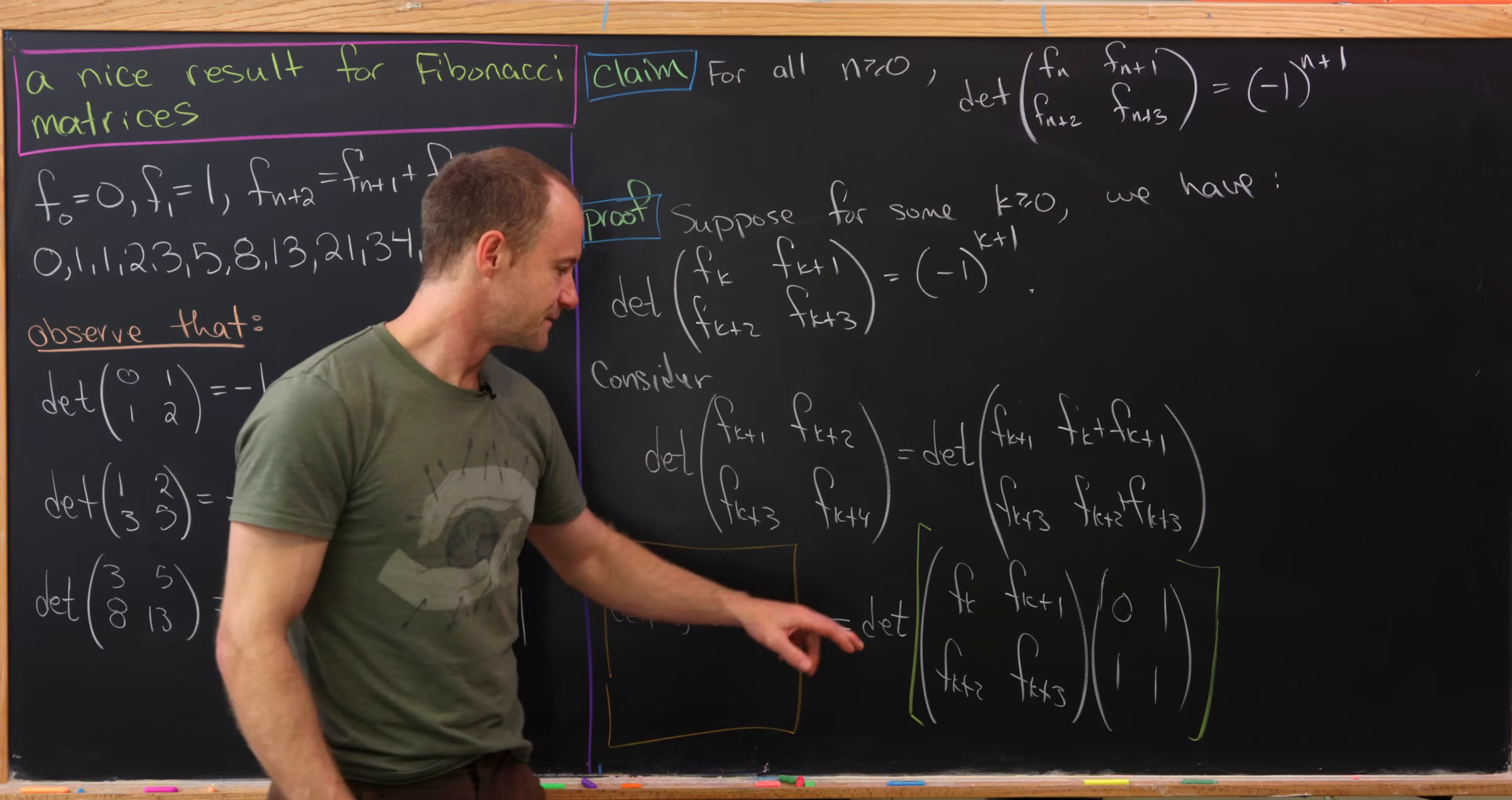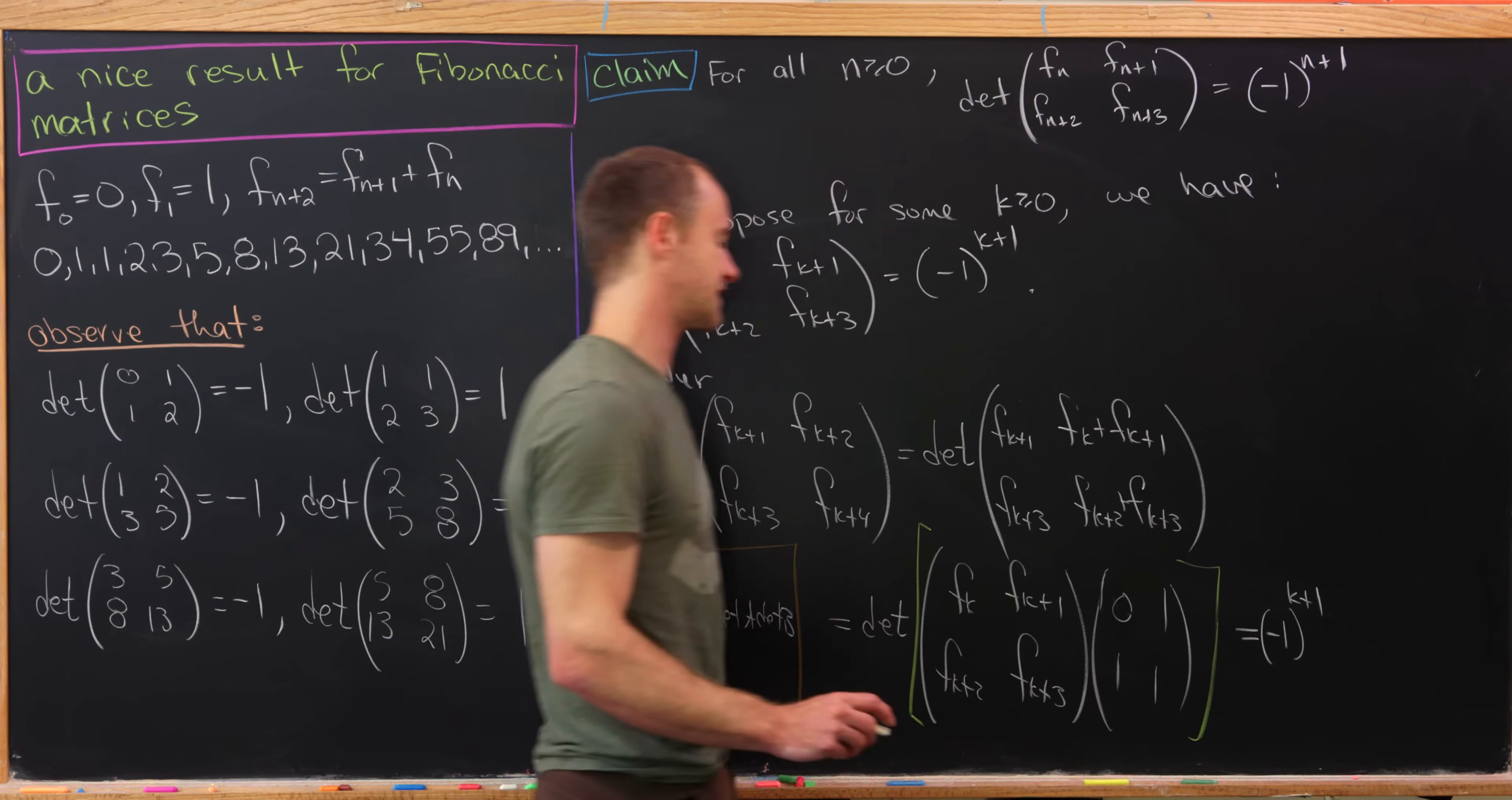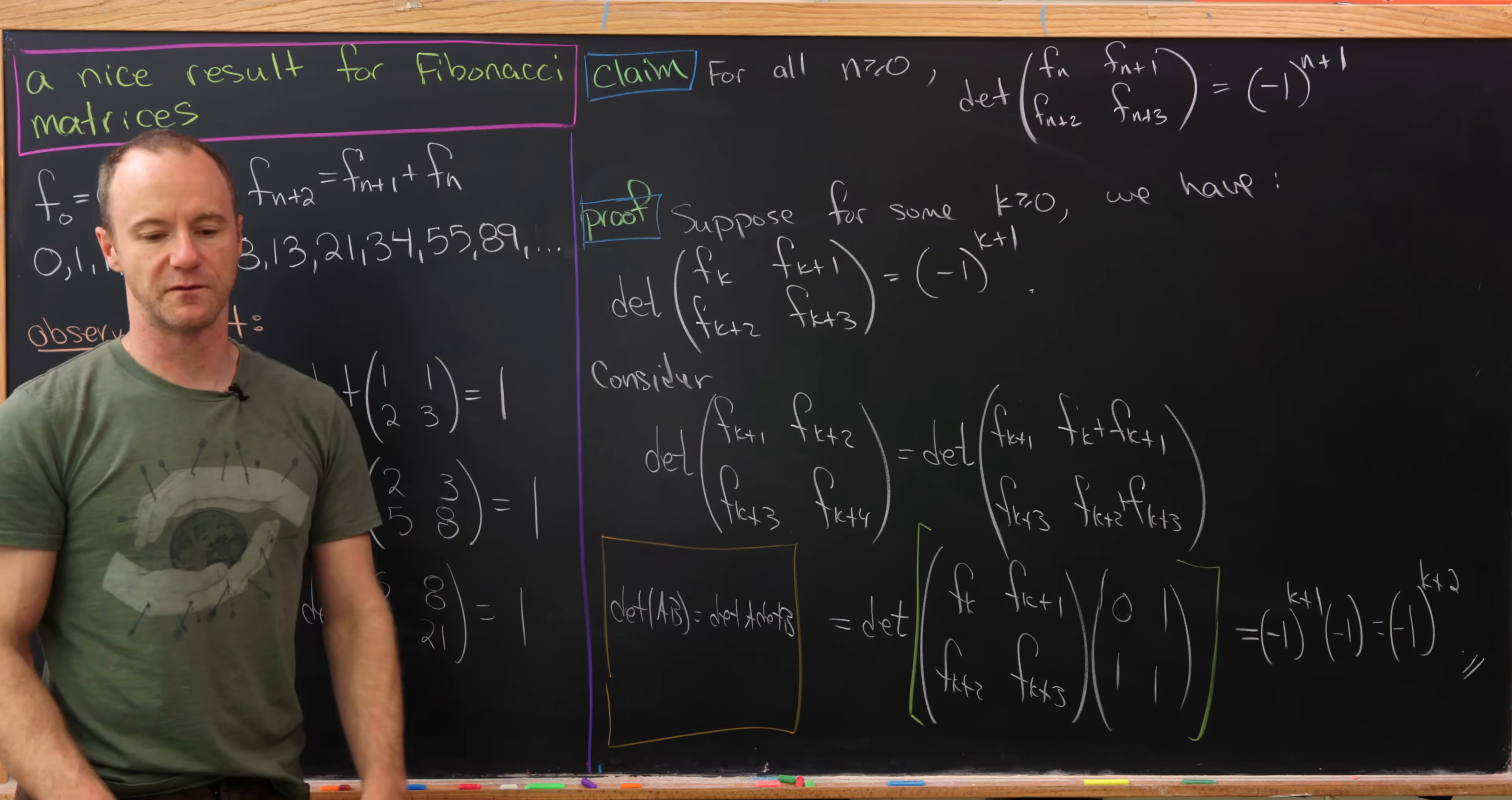Okay. So anyway, back to this. So that means the determinant of this product will be the determinant of this starting matrix times the determinant of the second matrix. But by the induction hypothesis, the determinant of the starting matrix is negative 1 to the k+1. And then just by standard determinant calculation, the determinant of the second matrix is negative 1. So in the end, we have negative 1 to the k+2. But that's exactly what we wanted to finish this proof by induction.